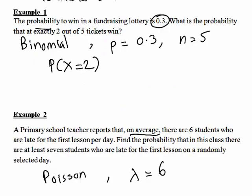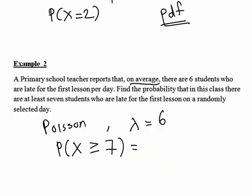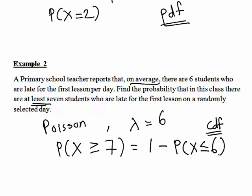Returning to our two examples: in Example 1 about lottery tickets, we wanted the probability that exactly 2 tickets win — probability x equals 2 — so that is a PDF problem. By contrast, in Example 2 we wanted the probability that at least 7 students were late, which is the probability x greater than or equal to 7, making it a CDF problem. Since the distribution is discrete, with only whole number values, this would be calculated from tables as 1 minus the probability of x less than or equal to 6. More detail on that in subsequent StatsCasts on calculations from tables.